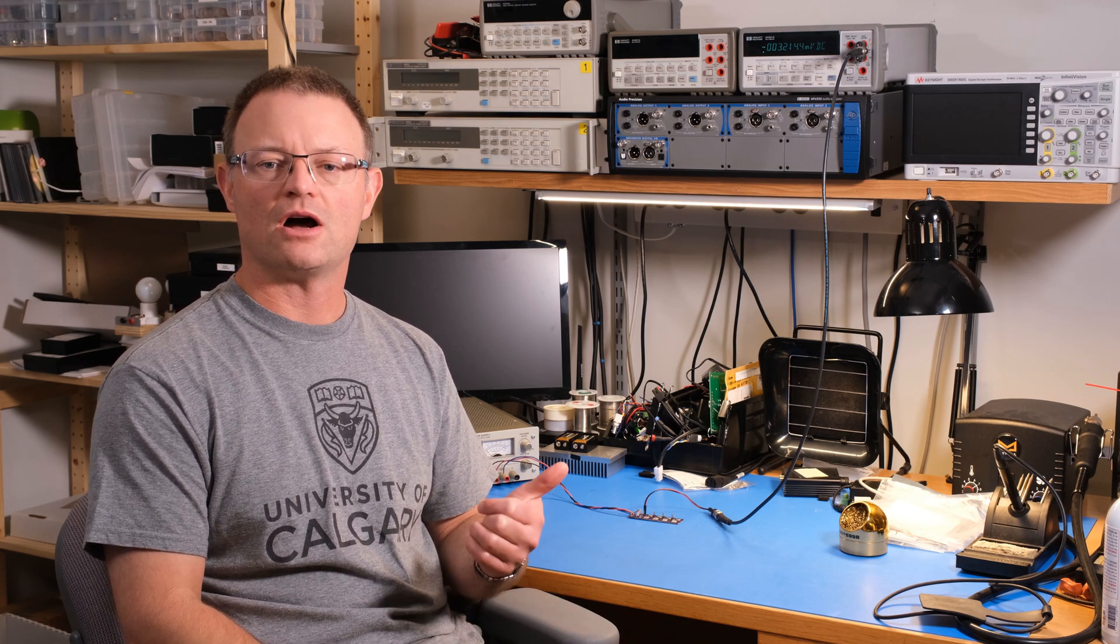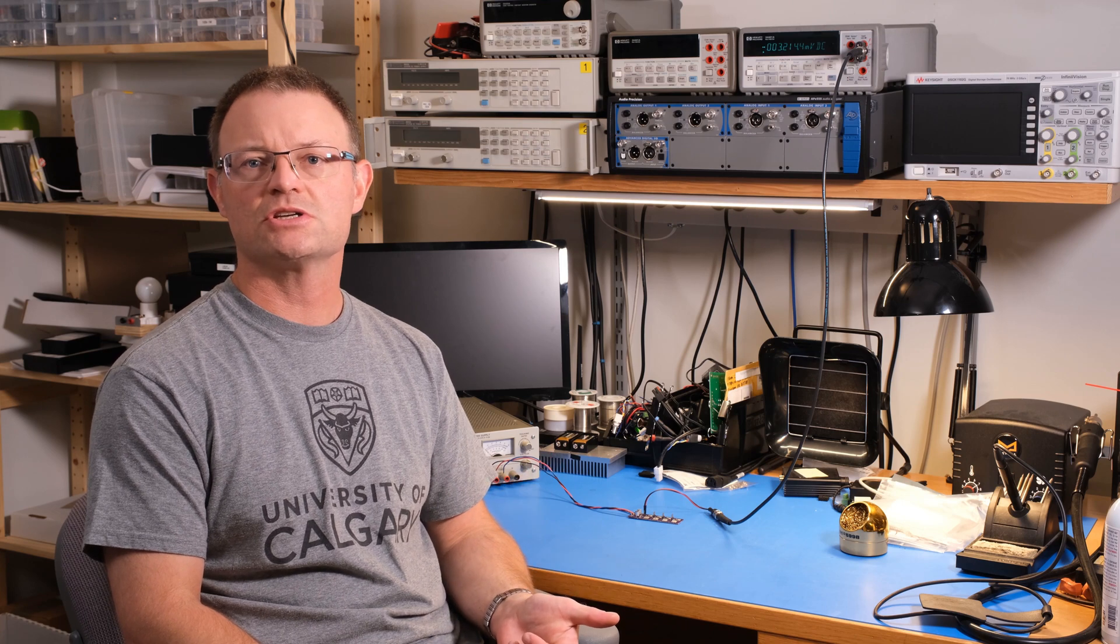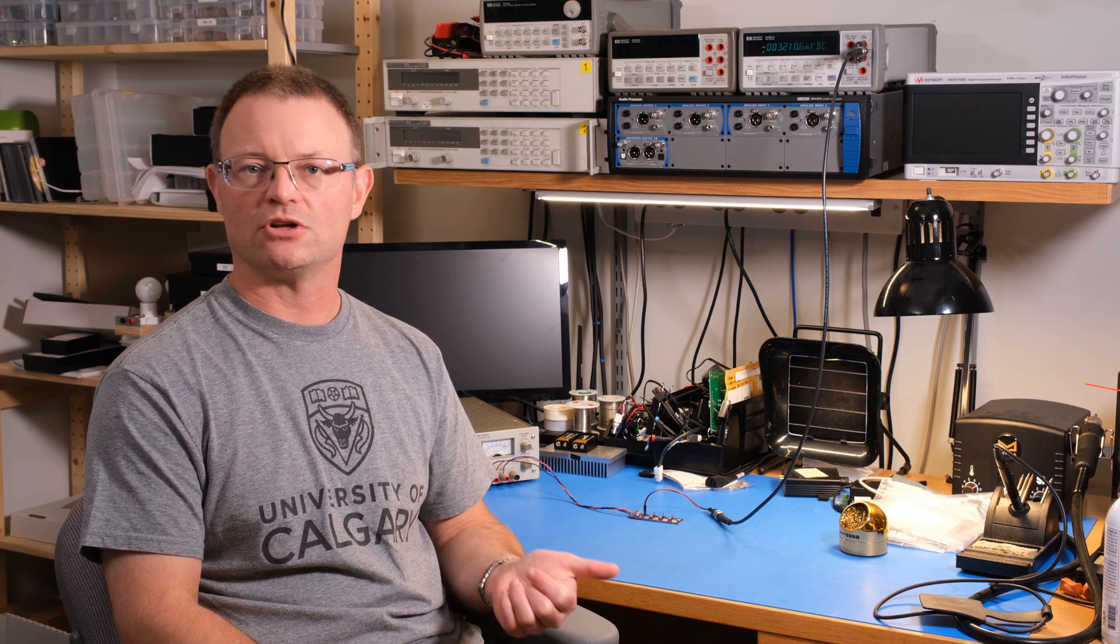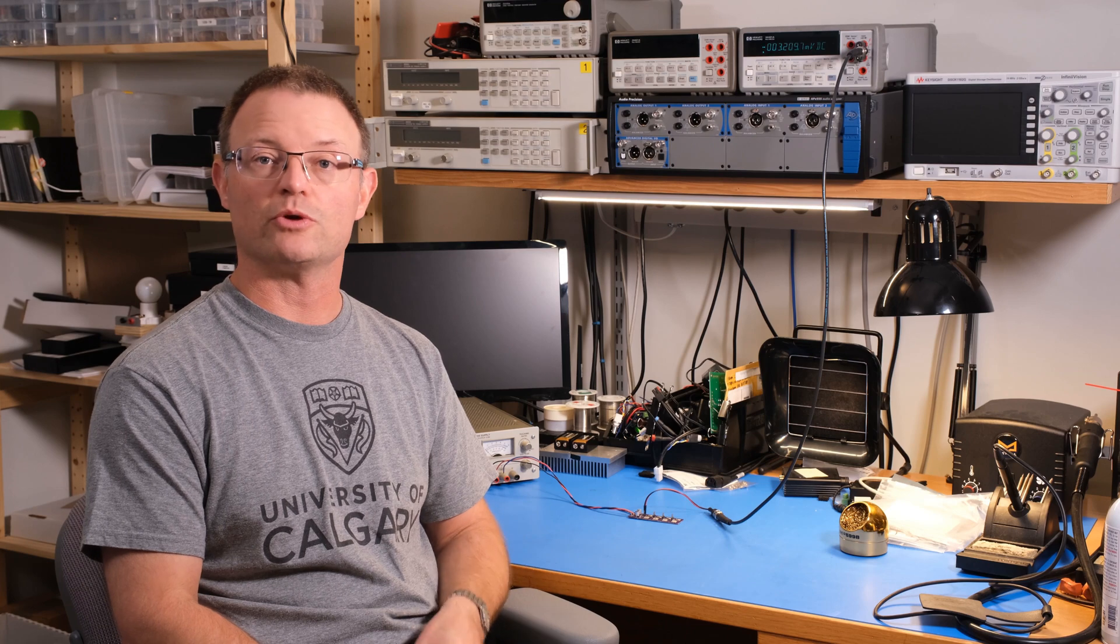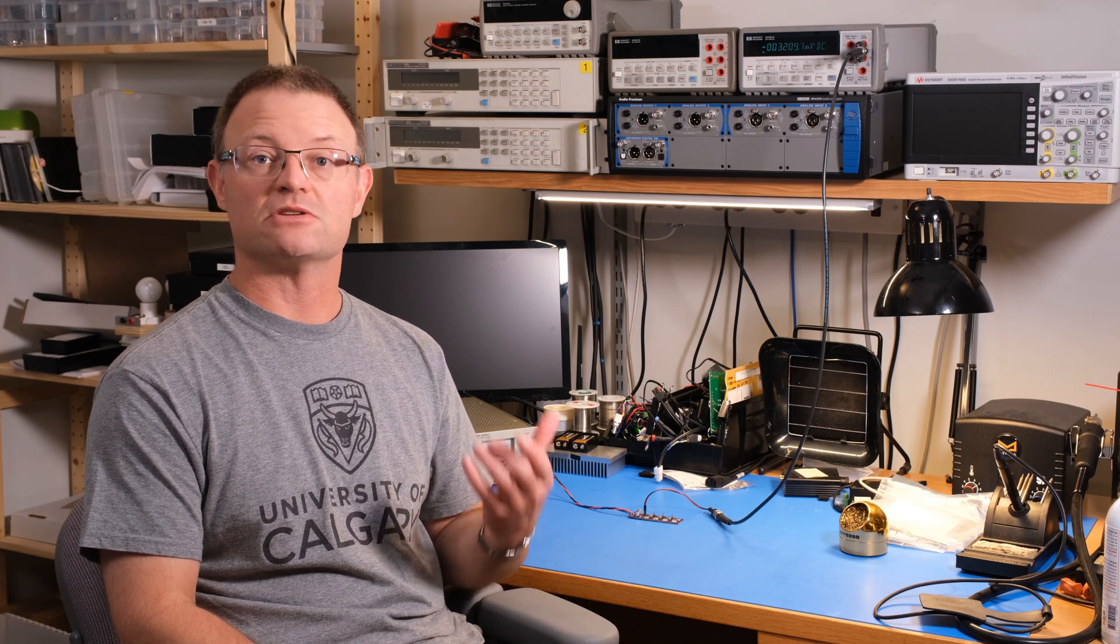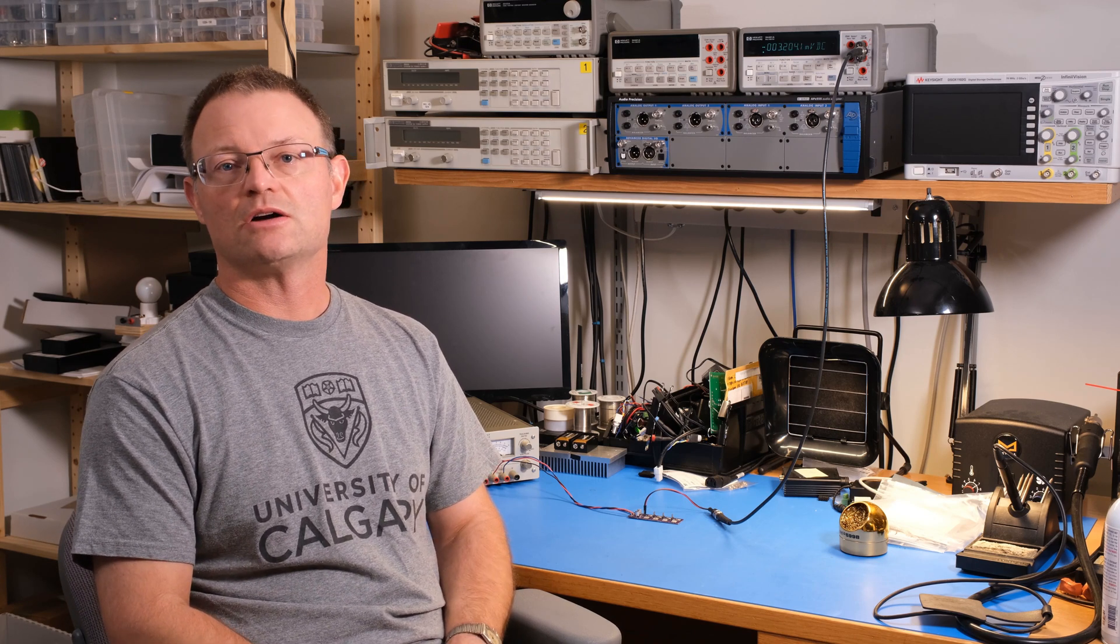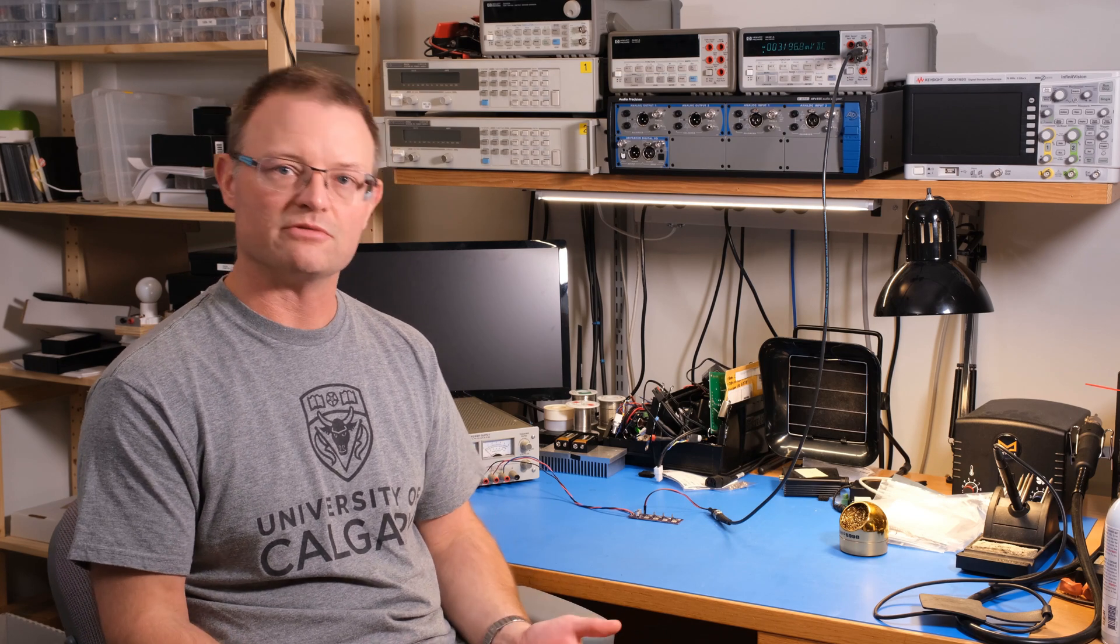The first circuit I soldered up with water soluble flux. As the name indicates, water soluble flux can be removed with water. That makes it really nice to work with in a scenario where you know you're going to clean the flux off the board. The drawback of it is that you have to remove the flux, otherwise you get these leakage currents that I've mentioned earlier.